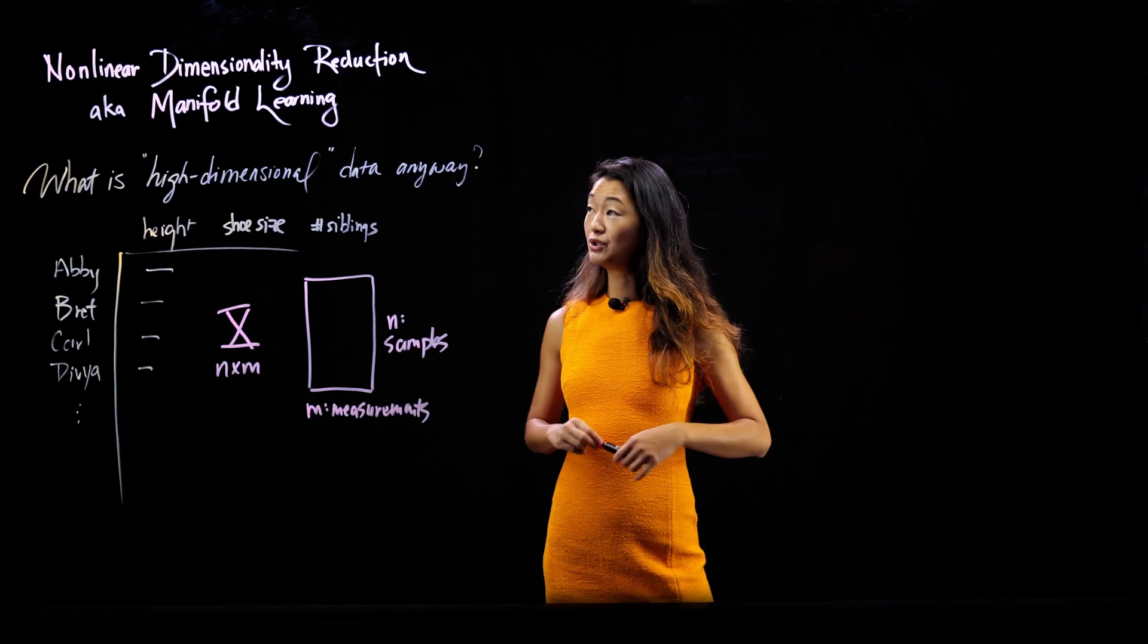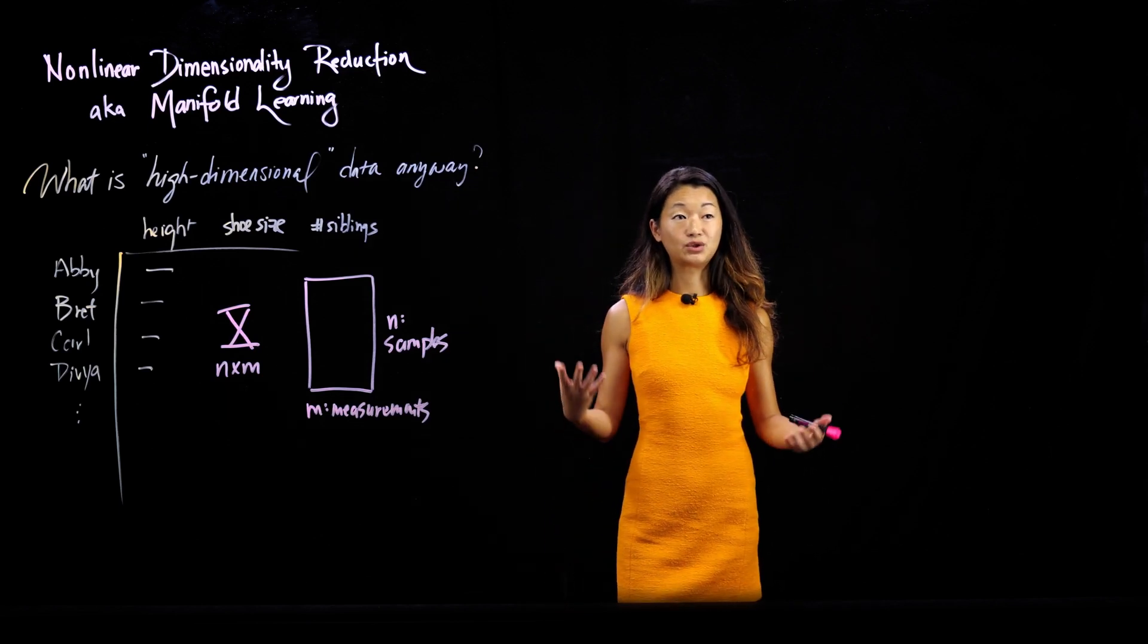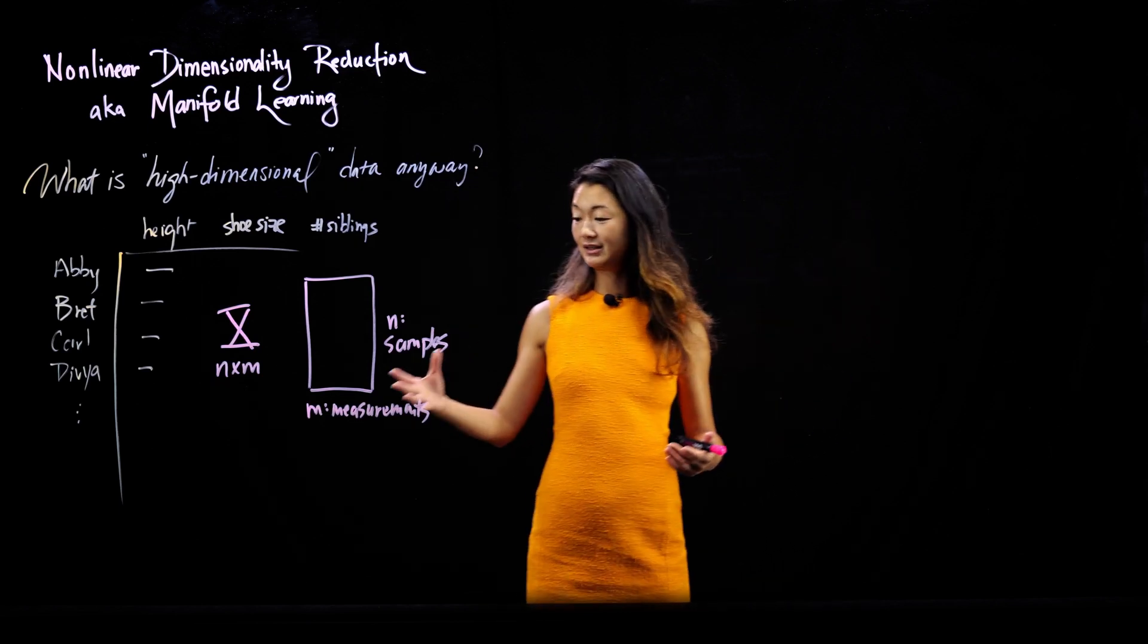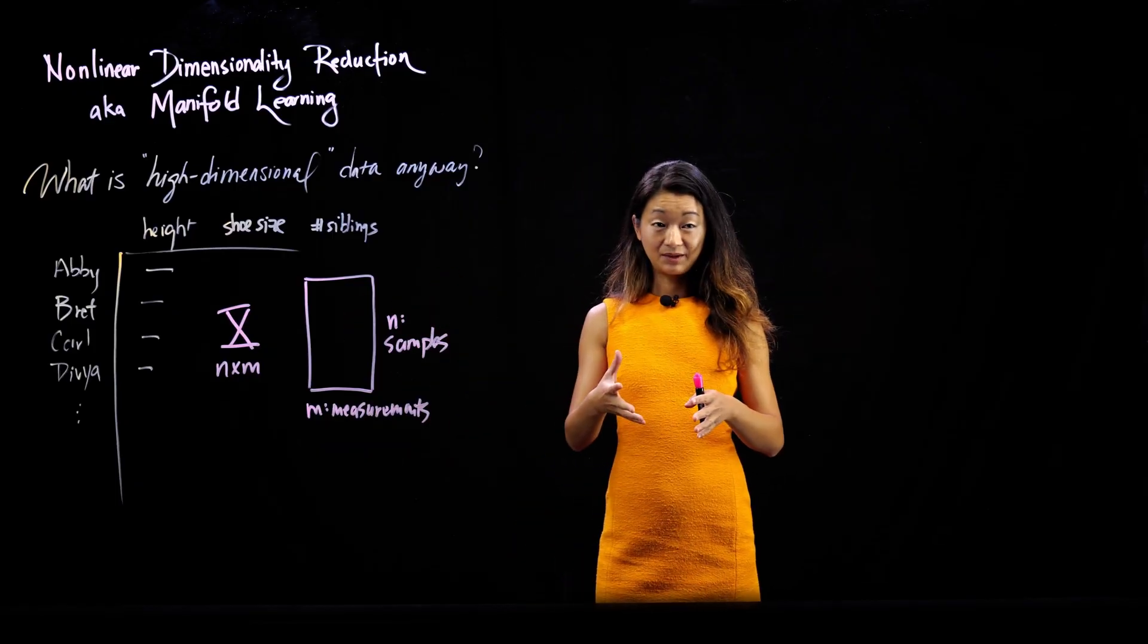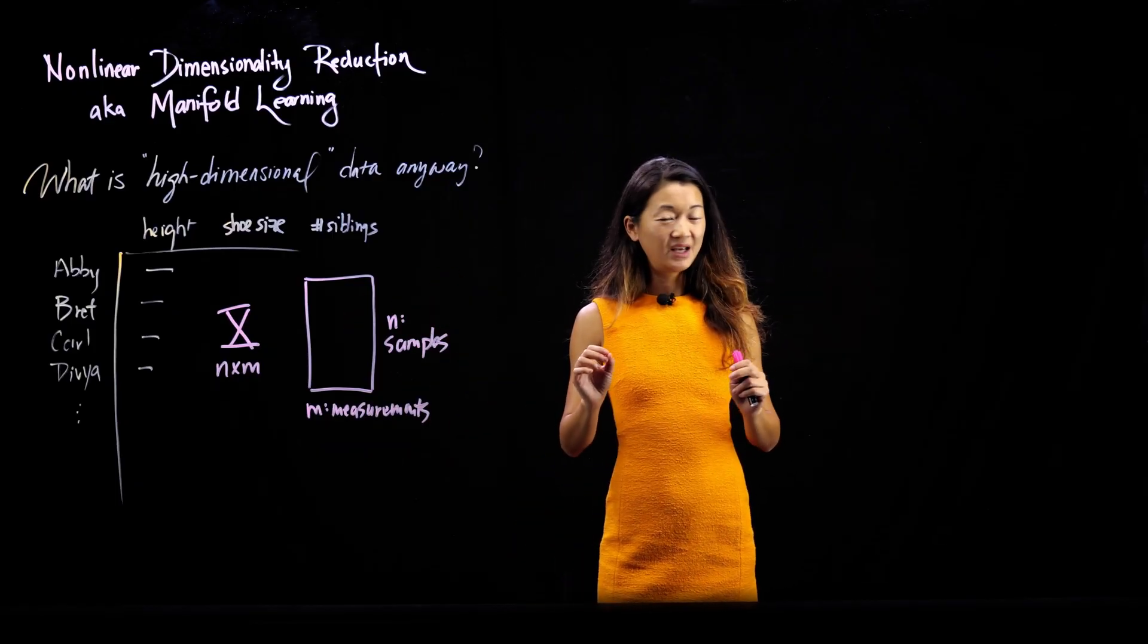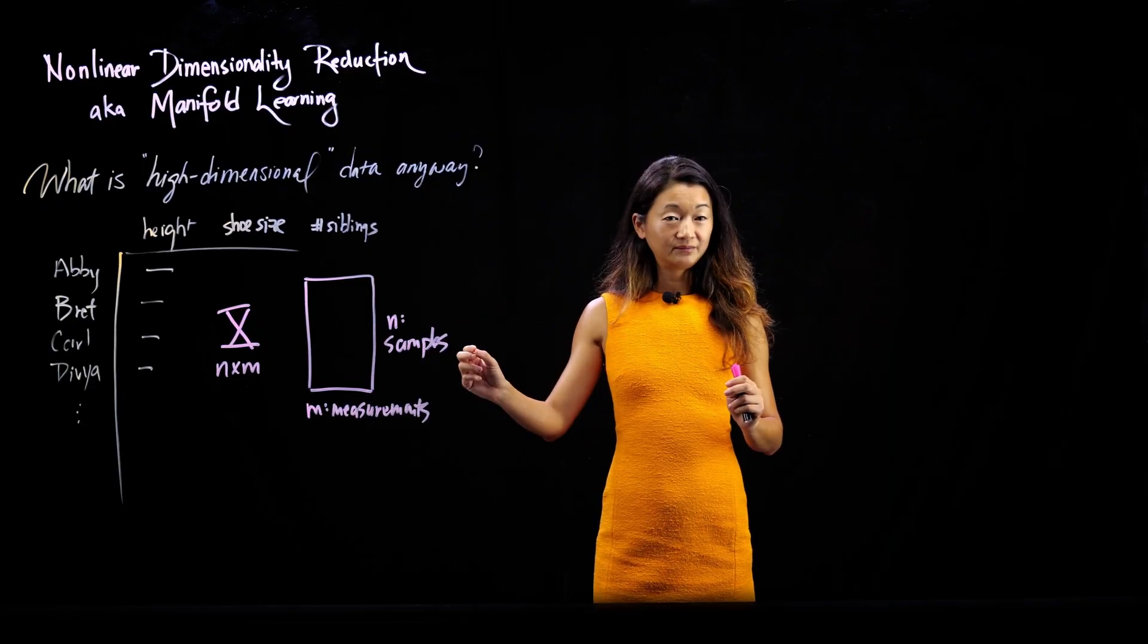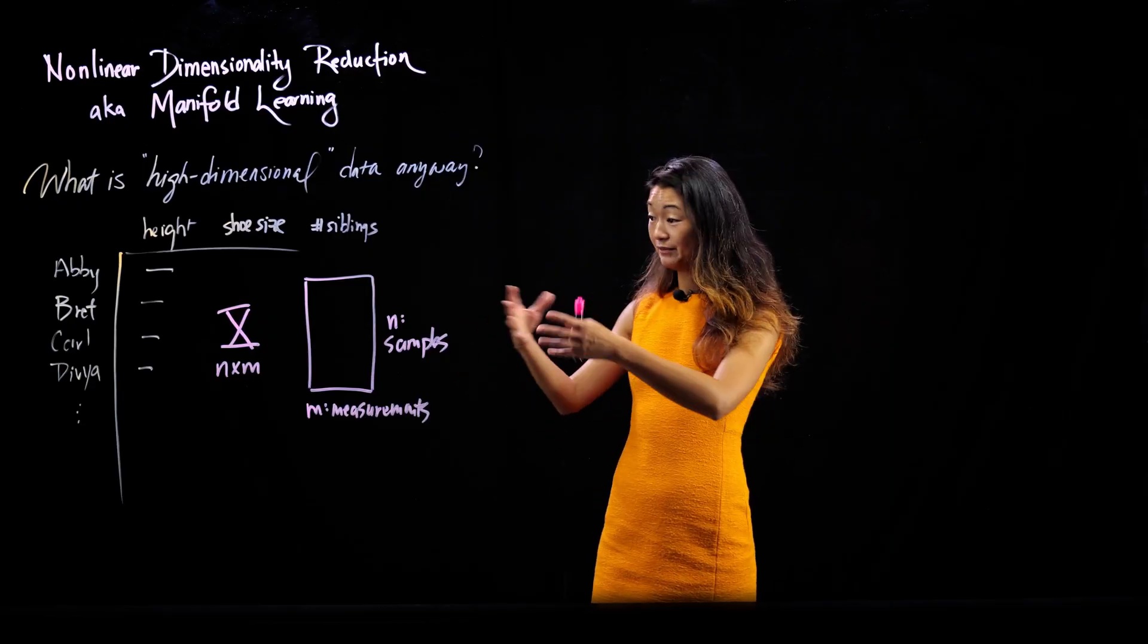And when we're reducing dimensionality, what we're concretely talking about is reducing the dimensionality of the data set, three, into something that's smaller than three. So we don't need much. You can reduce three to two, and that's a reduction.